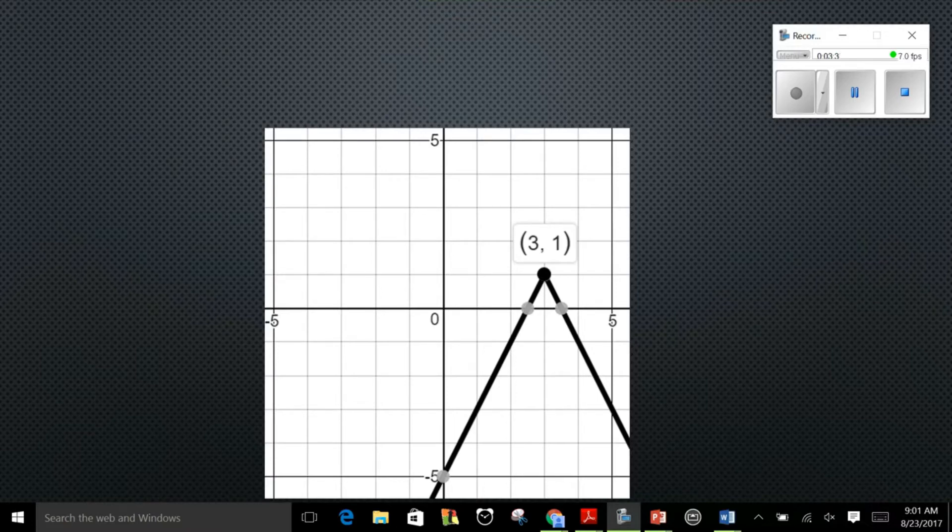Now let's put all those pieces together. Here I've given you an absolute value function that's been transformed and I'm going to ask you to write the equation given the graph. So the first thing we do is look at the vertex. The vertex here is 3, 1. So it's been moved right 3, up 1, and as you notice it's also been flipped upside down. So how do we describe that in a function?